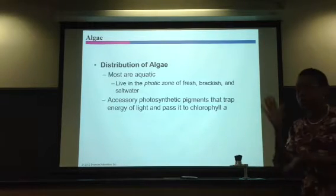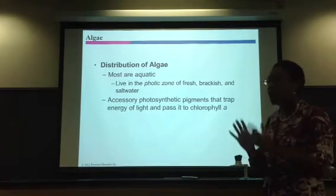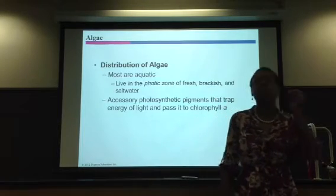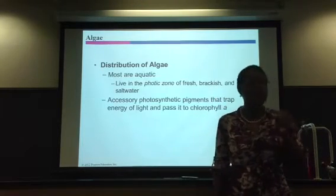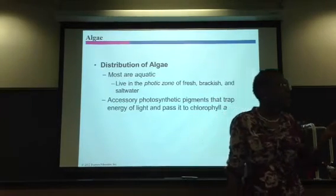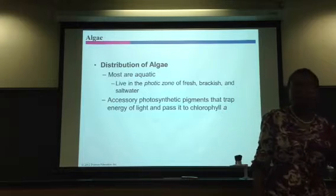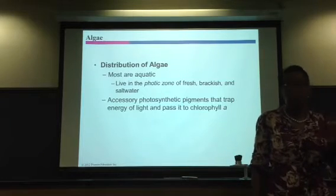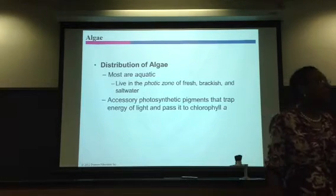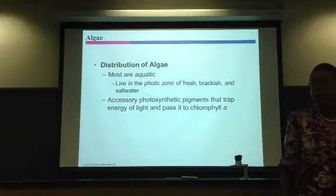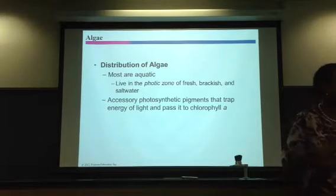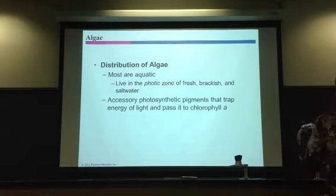We start with the protozoans first. What do you have to know? A, they're all unicellular. B, they lack cell walls. There's only one exception — one protozoan has a cell wall. It's the dinoflagellate.